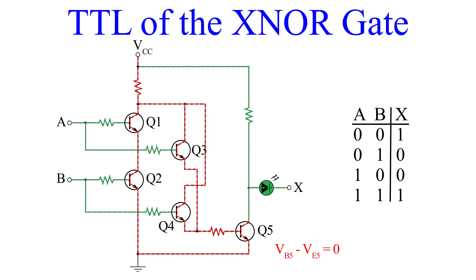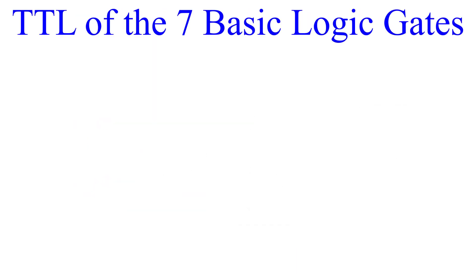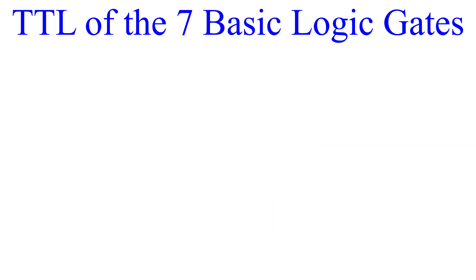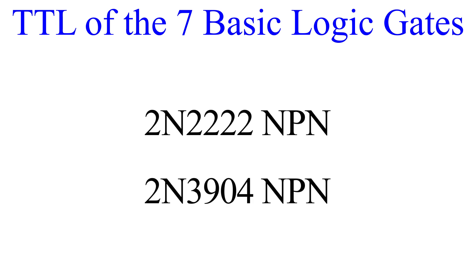We don't usually use NPN transistors to create TTL logic for an XNOR gate — this diagram is extremely finicky. It's better to use FETs in order to create an XNOR transistor-transistor logic gate. That's all the gates created using transistor-transistor logic. I hope you learned something here. If you plan to build these using breadboard and wires, I recommend using 2N2222 transistors or even 2N3904 — either will work great.